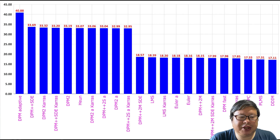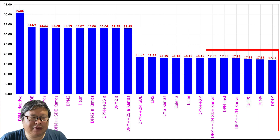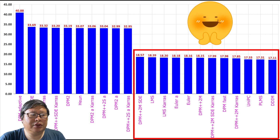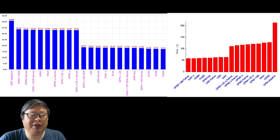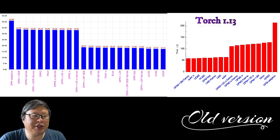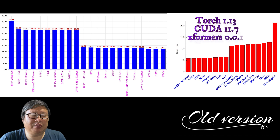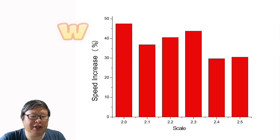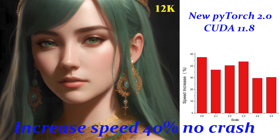From the image generation speed analysis, we can observe that the methods can be divided into three groups based on speed. The fast-speed group takes only half the time compared to the slow-speed group. I recommend trying the fast methods first to identify your favorite images. Comparing the image generation speeds with the previous version — Torch 1.13, CUDA 11.7, and xFormers 0.0.16 — the different speed groups remain the same. However, the new version offers a broader range of sampling methods and an approximately 40% increase in speed. With the new Torch 2.0.1, CUDA 11.8, and xFormers 0.0.17, you can expect a smoother and faster image generation experience.